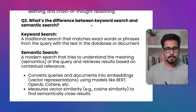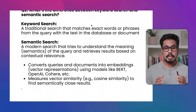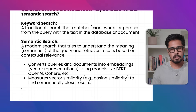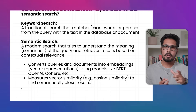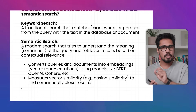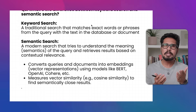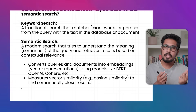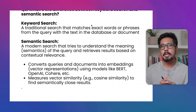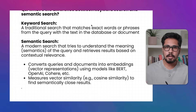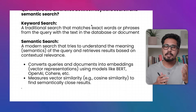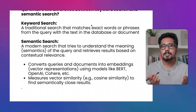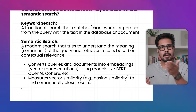The next question is: what's the difference between keyword search and semantic search? Keyword search is like doing Ctrl+F in a Word document — you search for a keyword. Google's search engine was initially built on keyword search. For example, searching for 'AI', 'LLMs', or 'Generative AI' returns documents containing those exact keywords.